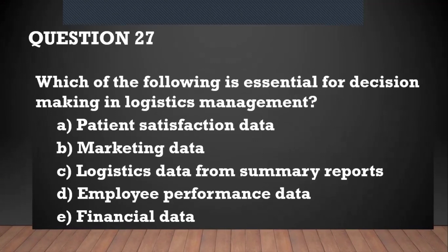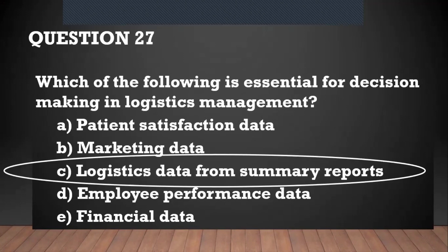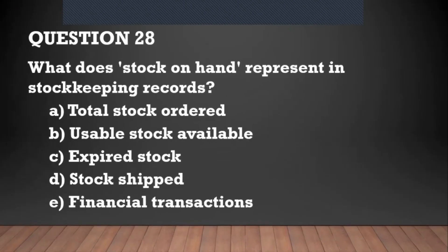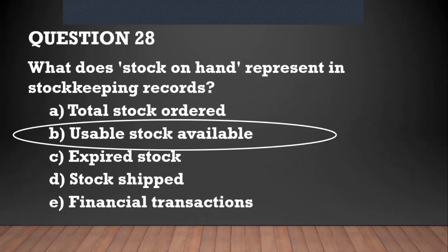Question number twenty-seven: which of the following is essential for decision making in management? You need a data resource that gives you a whole or summary of everything happening — that will be your logistics data from summary reports. Question number twenty-eight: what does stock on hand represent in stock keeping records?